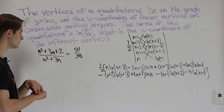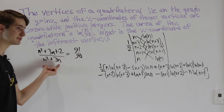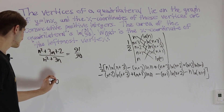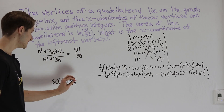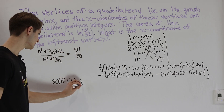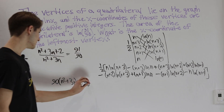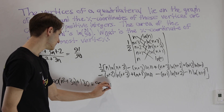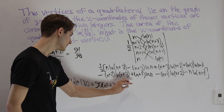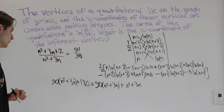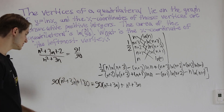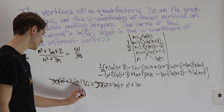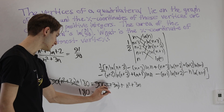We multiply both sides by 90(n²+3n) to clear the denominators. On the left we get 90(n²+3n) + 180. On the right we get 91(n²+3n), which we can write as 90(n²+3n) plus another (n²+3n). The 90(n²+3n) terms cancel from both sides, leaving us with 180 equals n²+3n.